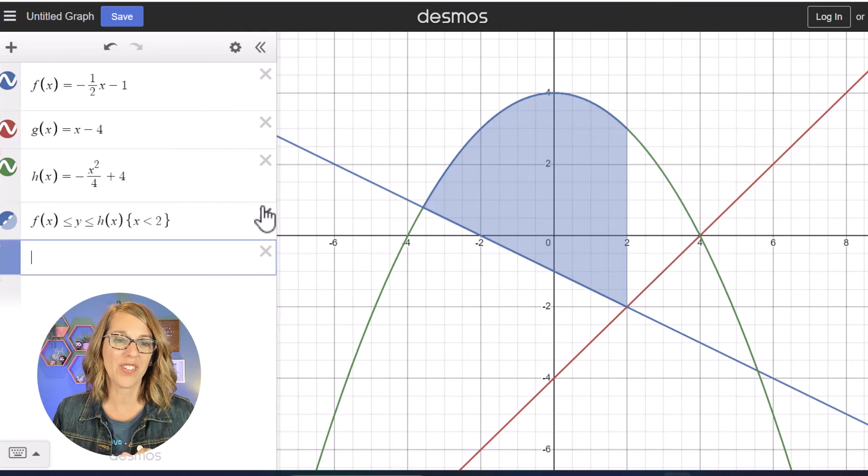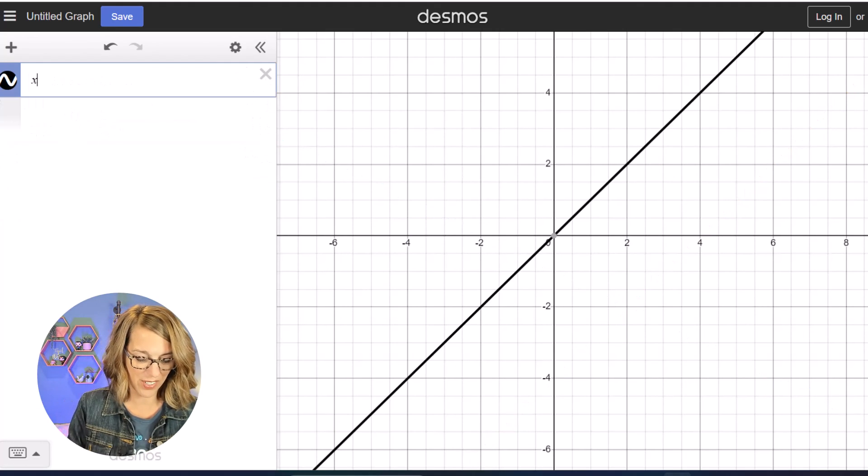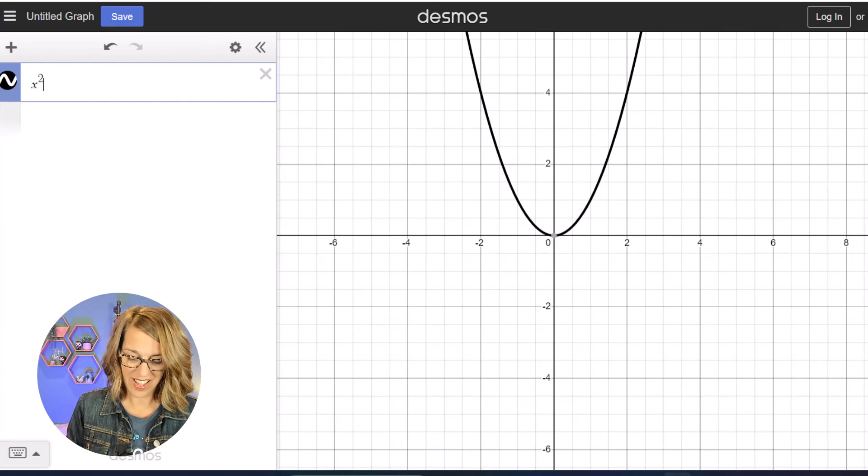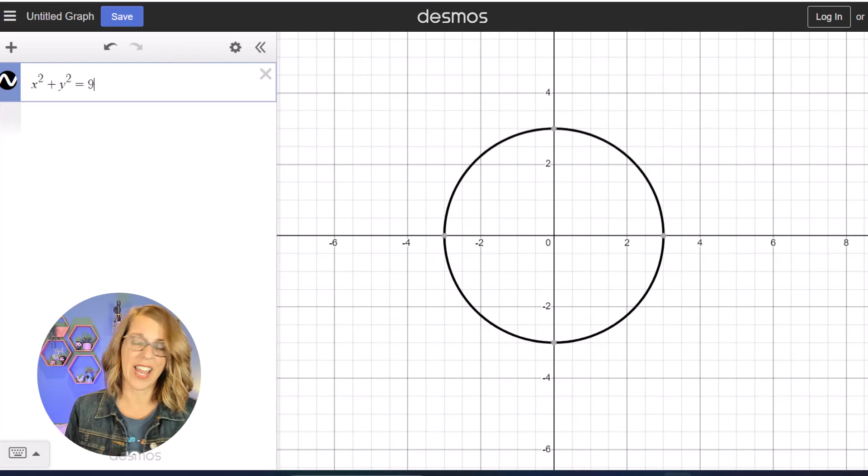The last thing that I want to show you to shade is a circle. So let's put a circle up here, something like X squared plus Y squared equals, we'll do equals 9. So I've got a circle with radius 3.